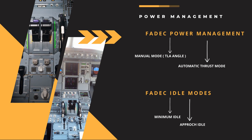Next, we will look at power management. The FADEC system manages engine thrust and optimizes performance. The EEC uses air data parameters from the air data inertial reference system for rating calculations. The FADEC manages power according to two thrust modes: manual mode depending on thrust lever angle, and automatic thrust mode depending on the auto-thrust function generated by the auto flight system. The FADEC also provides two idle mode selections: minimum idle and approach idle. If the aircraft is on the ground with slats extended, the engine will stay at minimum idle, but in flight it will go to approach idle.